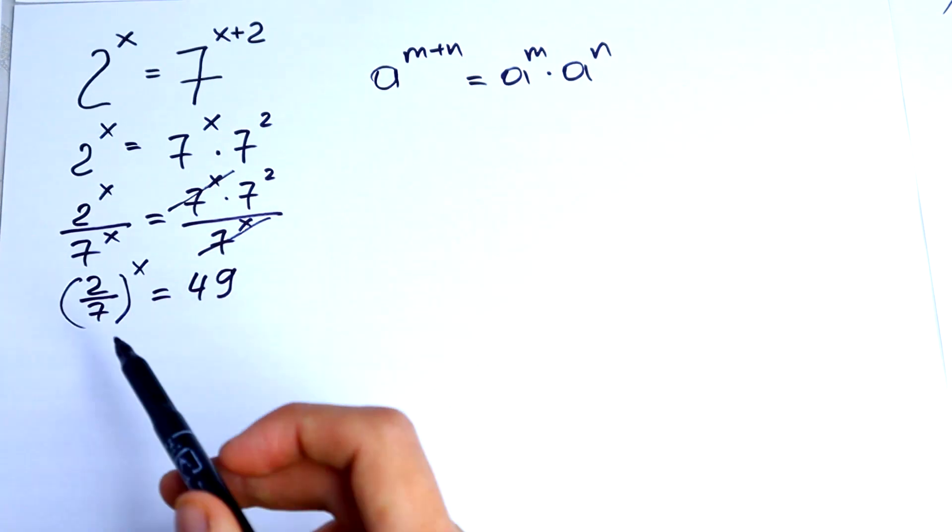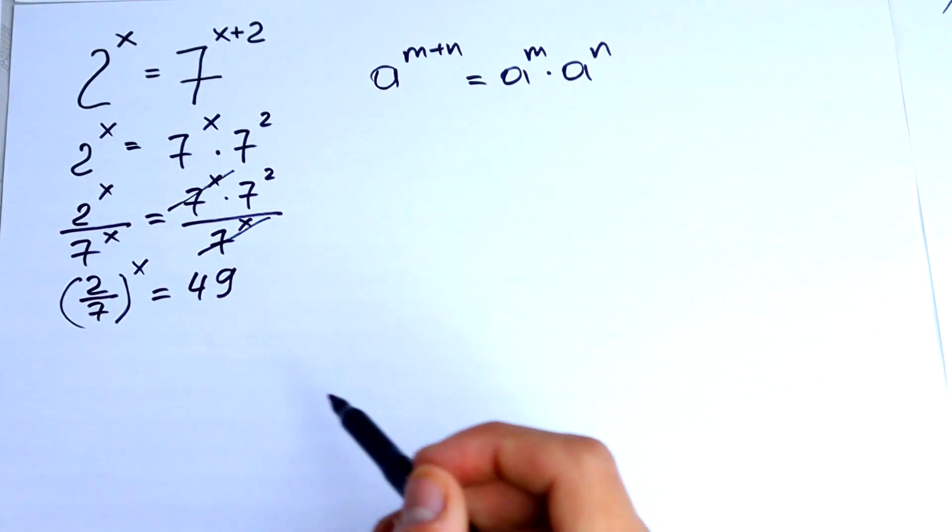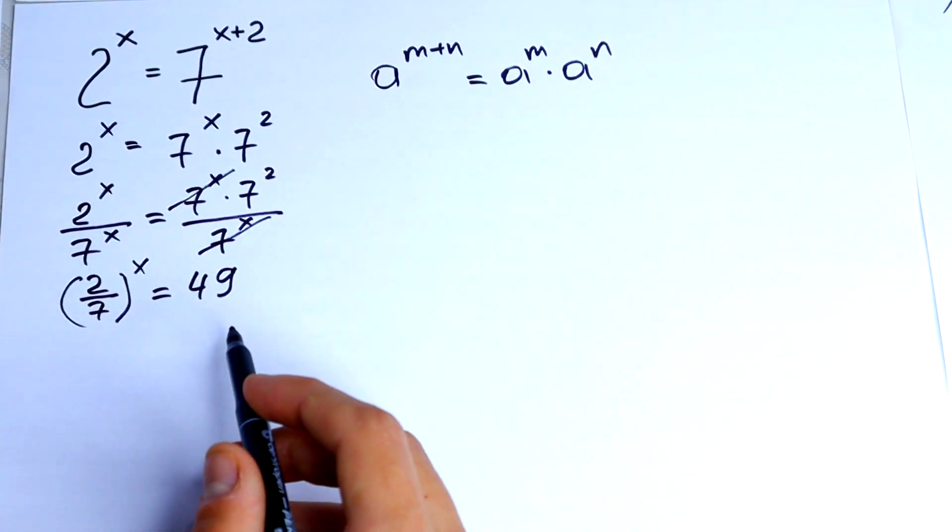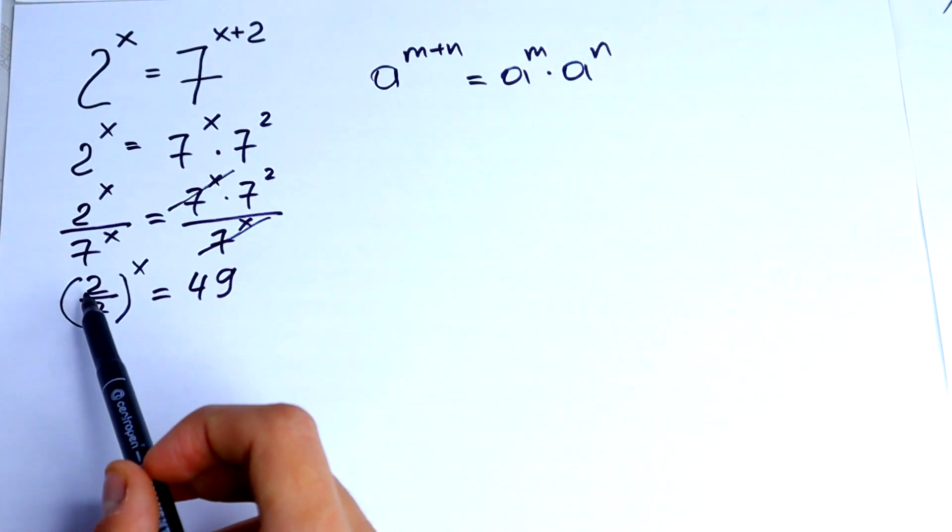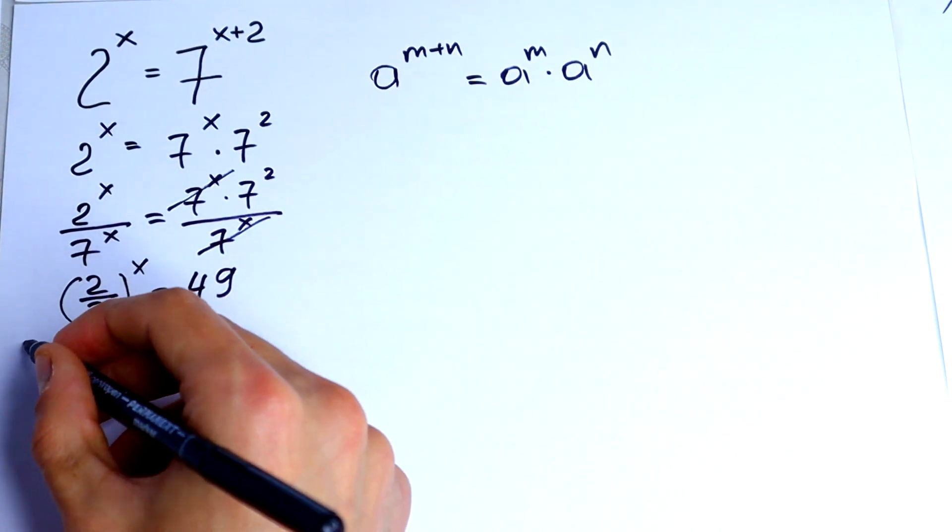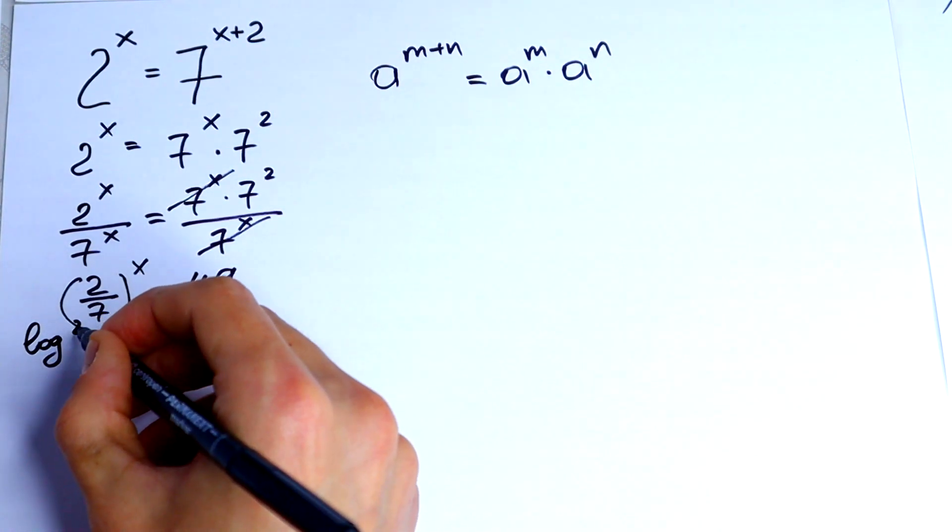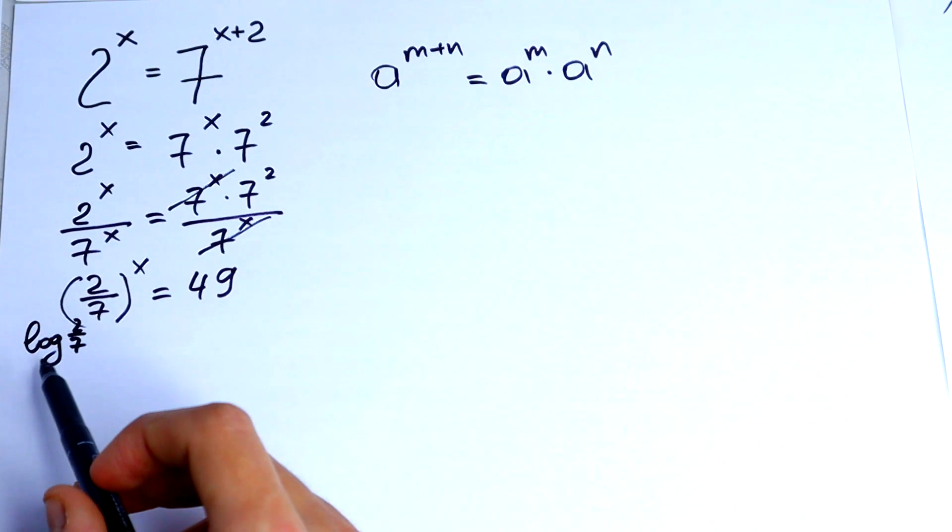What's next? Let's take log from both of the sides. But what base? Base would be 2 over 7. And do this right here.